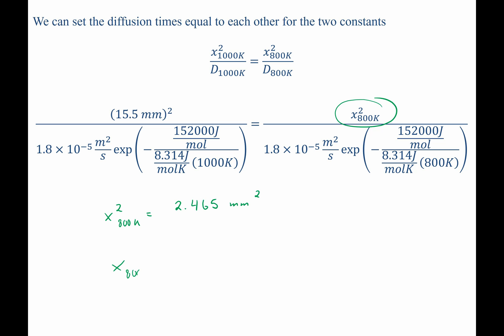Taking the square root of that, the position at which we achieve 3.2 weight percent of A in B with an 800 Kelvin heat treatment is 1.57 millimeters.